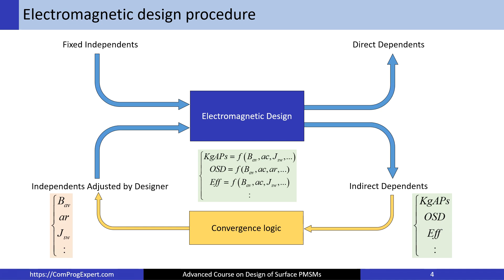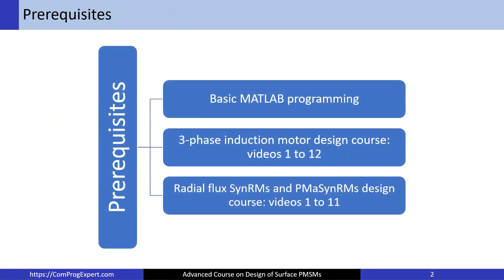We also have the electromagnetic design procedure flowchart, which is very important. During the course I will explain different parts of this flowchart and how to write functions for optimization — for example, to minimize the weight of active parts or maximize efficiency. I explained this flowchart in the prerequisite courses as well, so you can watch those related videos first.